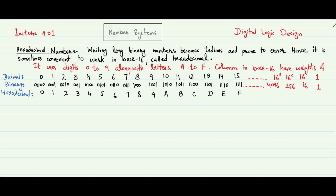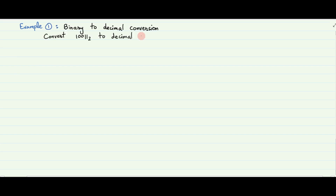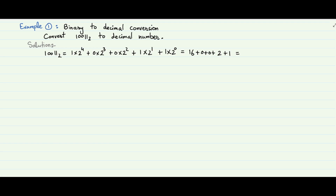We will now go through some examples which explain the conversion from one number system to another. Example 1 is binary to decimal conversion. We will convert the binary number 10011 base 2 to its decimal equivalent. For this purpose, multiply each bit in the binary number with the base raised to the power of its column number. Remember that column numbers in number systems always start from 0 and increase from right to left. So, the decimal equivalent of 10011 base 2 is 19 base 10.